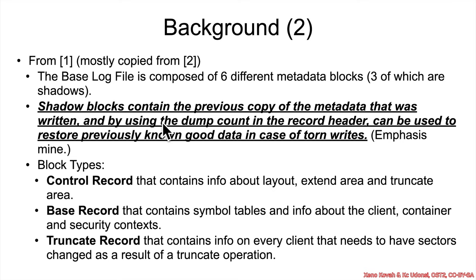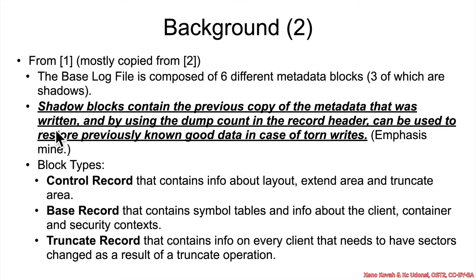Specifically, the issue here has to do with the base log file, which has six different types of metadata blocks — three primary blocks and three shadow copies. The whole point of these shadow copies is to have a previous record of the metadata so that if there is some sort of failure to write, you can restore information from the known good copy. The crux of this vulnerability is going to have to do with the interaction between the shadows and the non-shadow type.